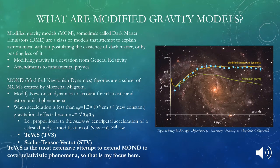TeVeS is a species of MOND theory. It is the most extensive attempt to extend MOND to cover relativistic phenomena, and it is considered one of the only complete theories coming out of MOND because it has testable, empirically verifiable parts. MOND itself is just a paradigm — it can have instantiations, but you don't test MOND itself.